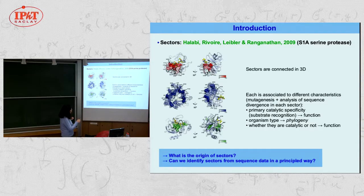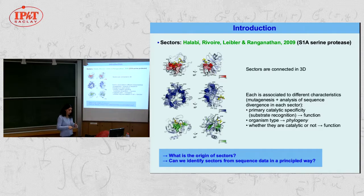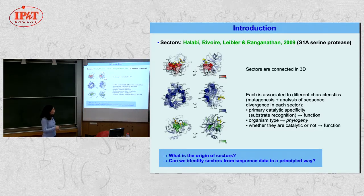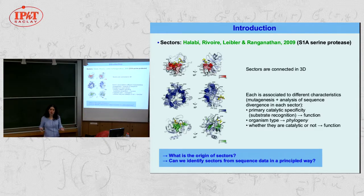Mutagenesis experiments show that sectors have functional meaning: mutating amino acids in one sector affects the catalytic specificity of these enzymes and how they recognize the substrate. Mutating residues in another sector changes whether the enzyme is catalytic at all. Interestingly, the second sector has rather a phylogenetic interpretation — which again reflects the interplay between optimization-based and phylogeny-based correlations.